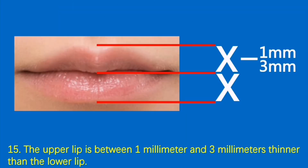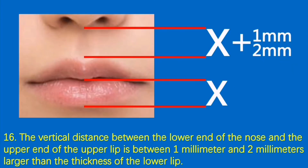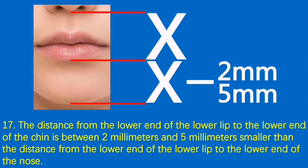15. The upper lip is between 1 millimeter and 3 millimeters thinner than the lower lip. 16. The vertical distance between the lower end of the nose and the upper end of the upper lip is between 1 millimeter and 2 millimeters larger than the thickness of the lower lip. 17. The distance from the lower end of the lower lip to the lower end of the chin is between 2 millimeters and 5 millimeters smaller than the distance from the lower end of the lower lip to the lower end of the nose.